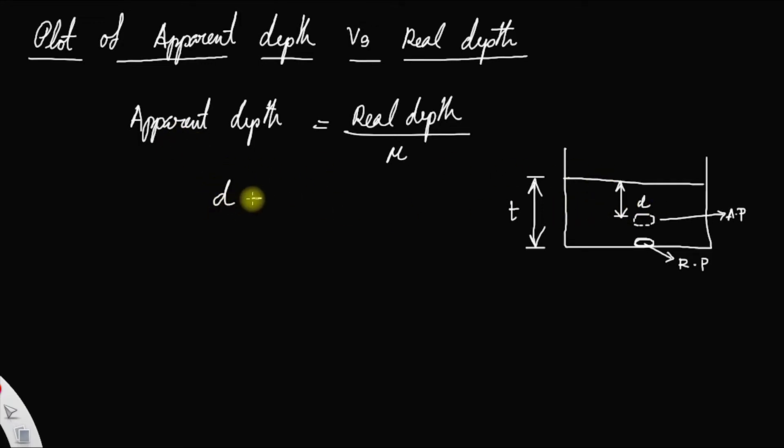We have apparent depth is equal to real depth t divided by mu. You can write this as d is equal to 1 by mu into t. You know this one is a linear relation, this relation is of the form y is equal to some kind of k, a proportionality constant x.